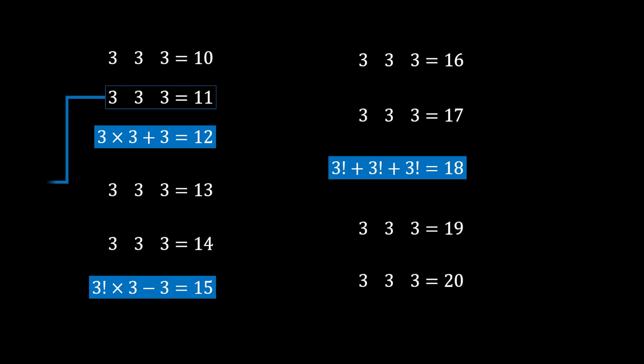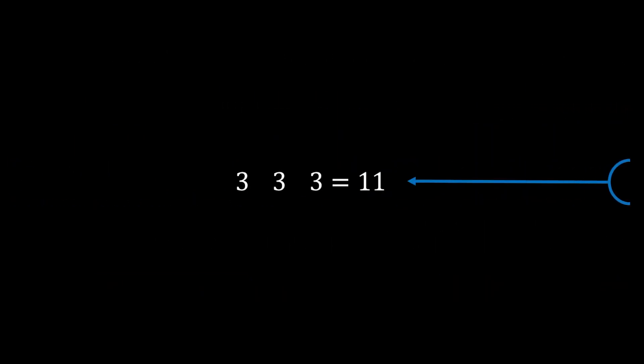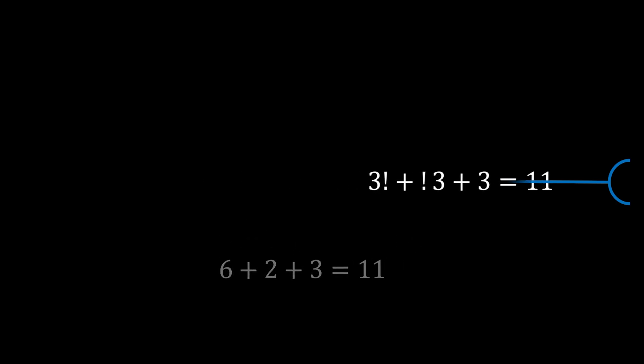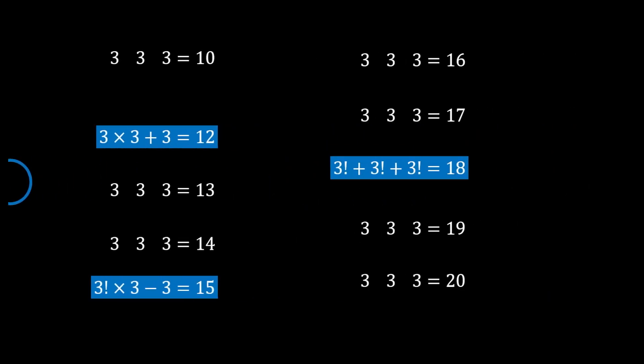Next, number 11 — for this one we use sub-factorials for the first time. My solution is 3! + !3 + 3 = 6 + 2 + 3 = 11.